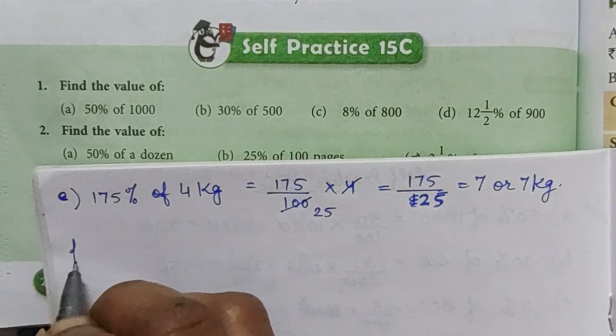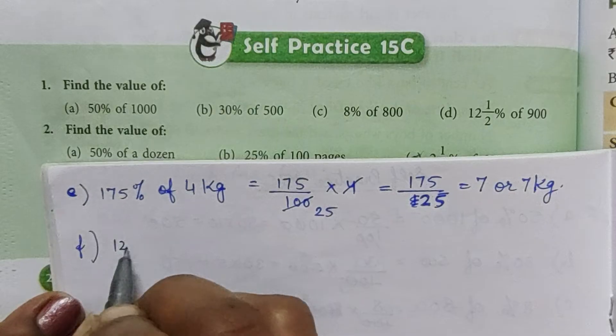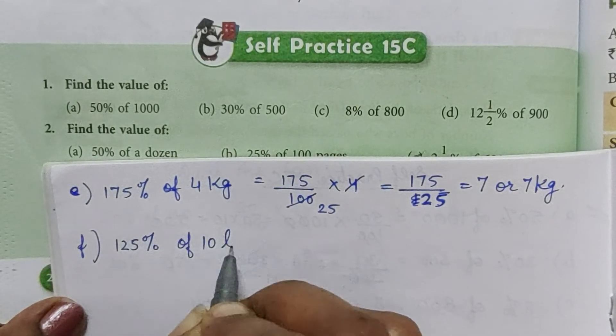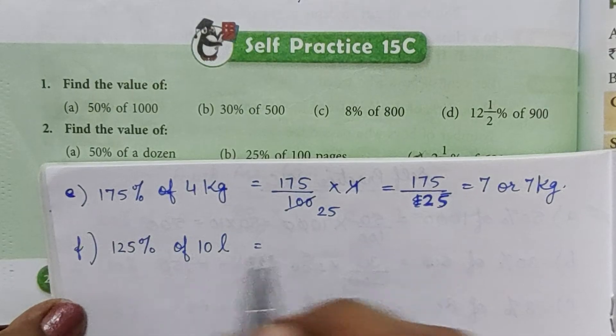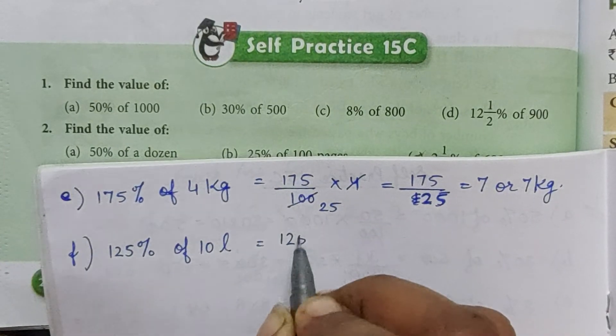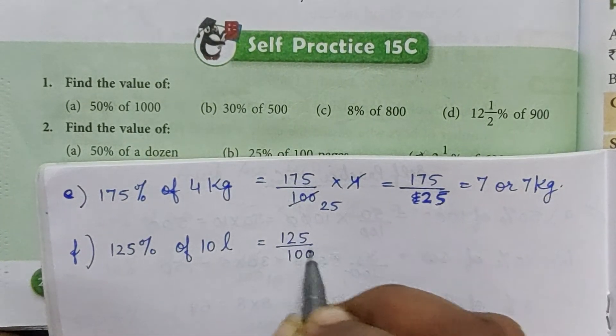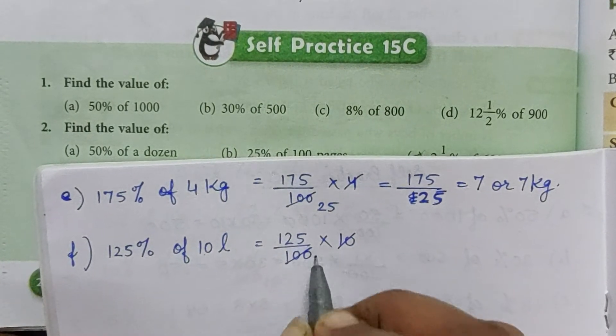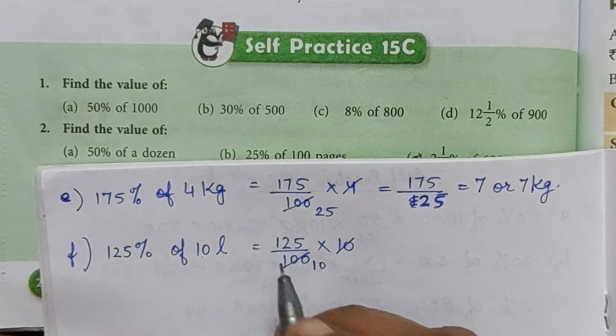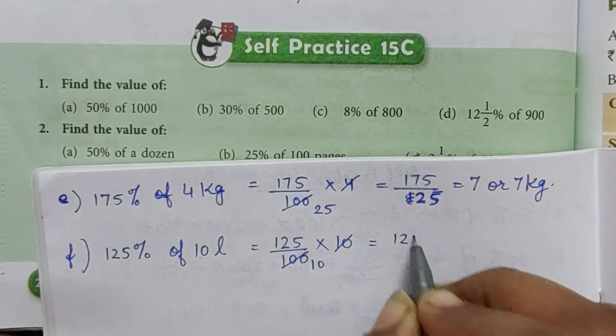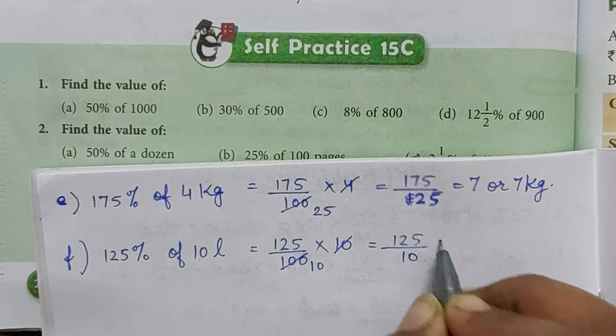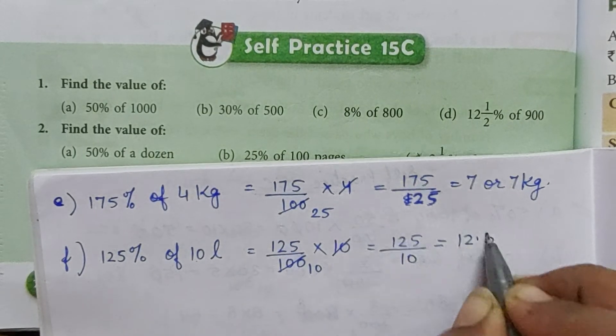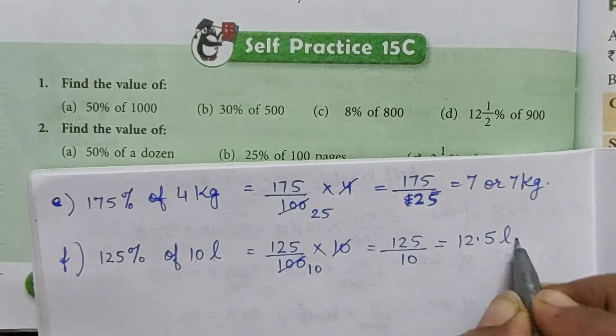Part f: 125% of 10 liters. 125% means 125 by 100 into 10. 10 tens are 100, so 125 by 10. Dividing gives 12.5 liters.